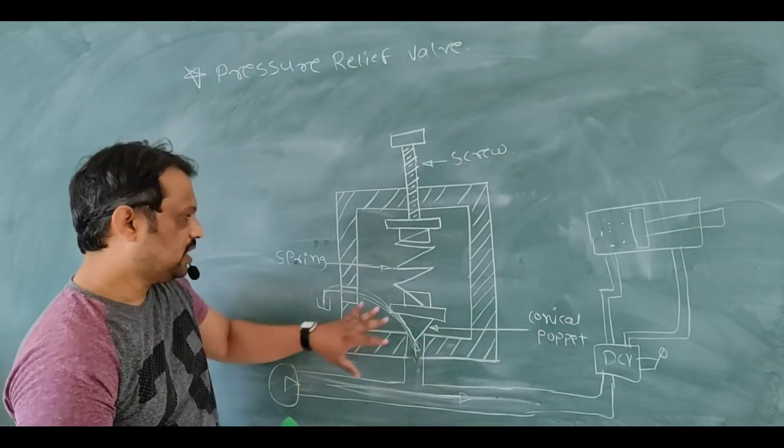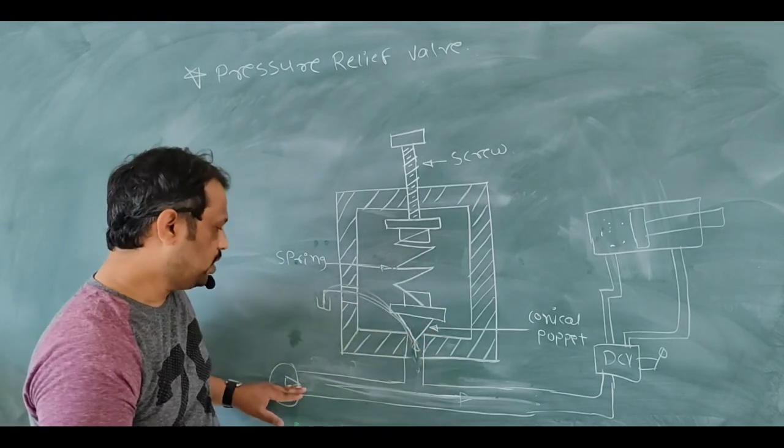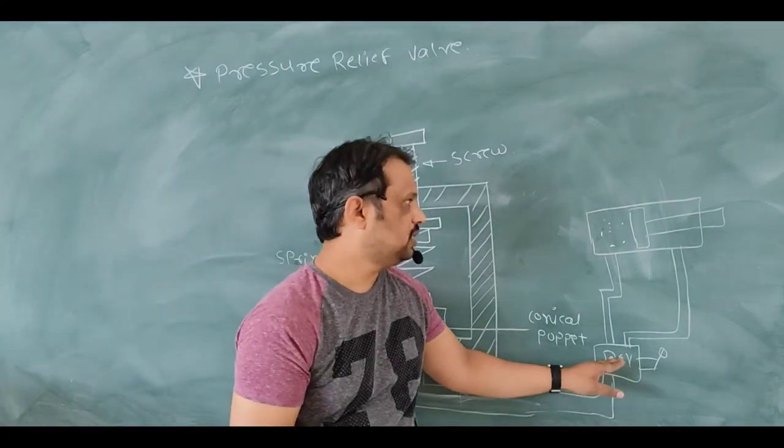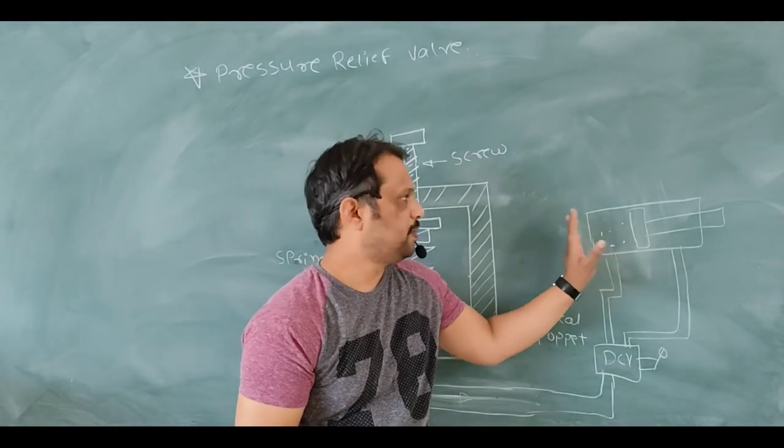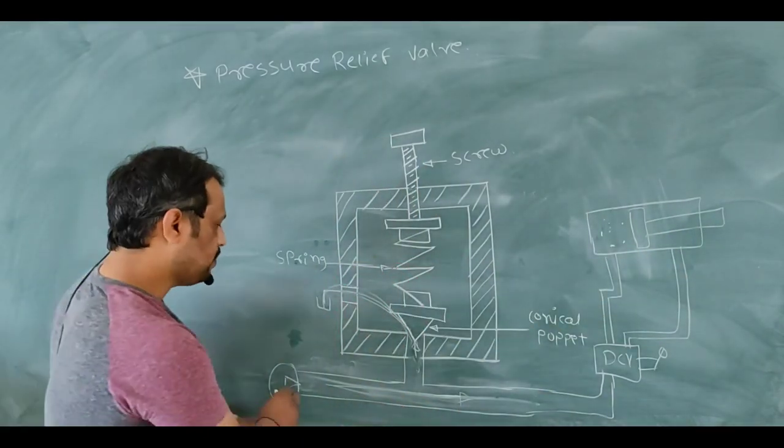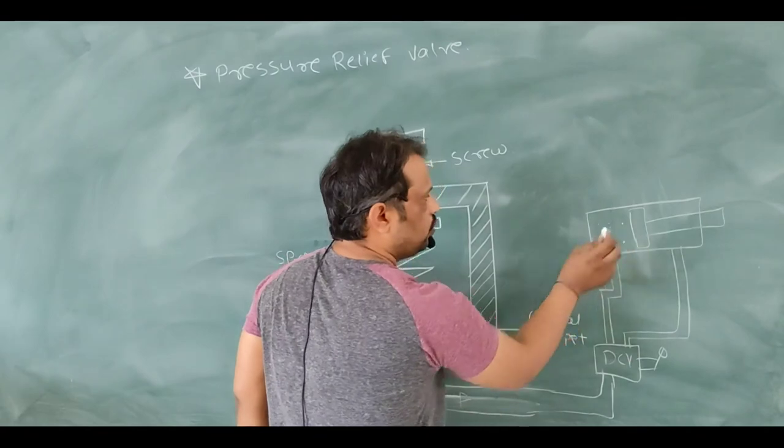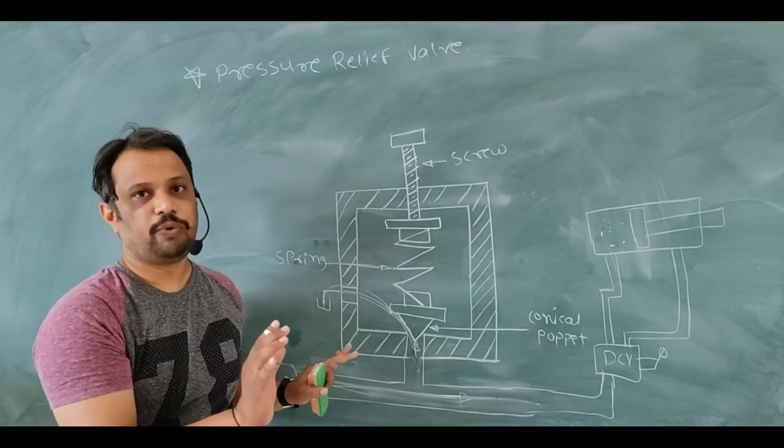Consider that there is no pressure relief valve over here and oil goes to your DC valve, DC valve to your actuator and this occupies your left side space and piston goes to the extreme right side but still pump continuously sends oil to your actuator. Pump doesn't know that it reaches to your extreme position.